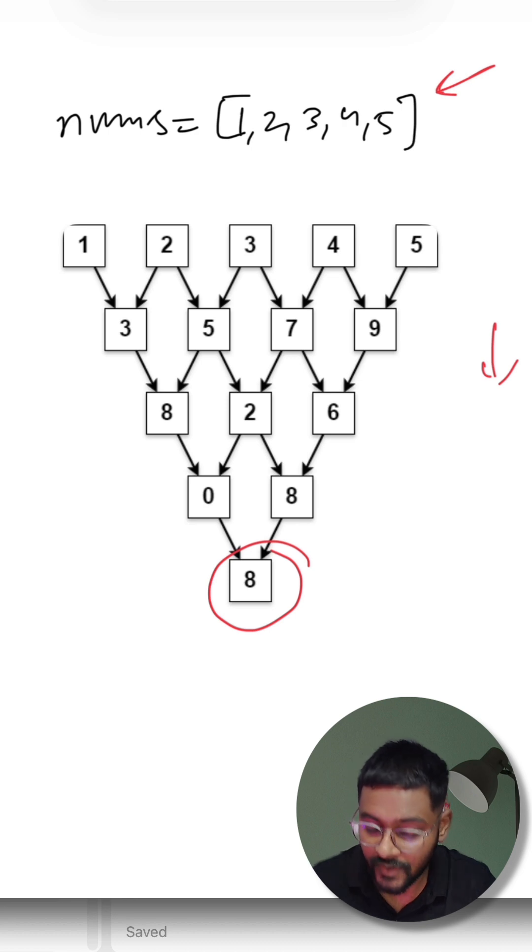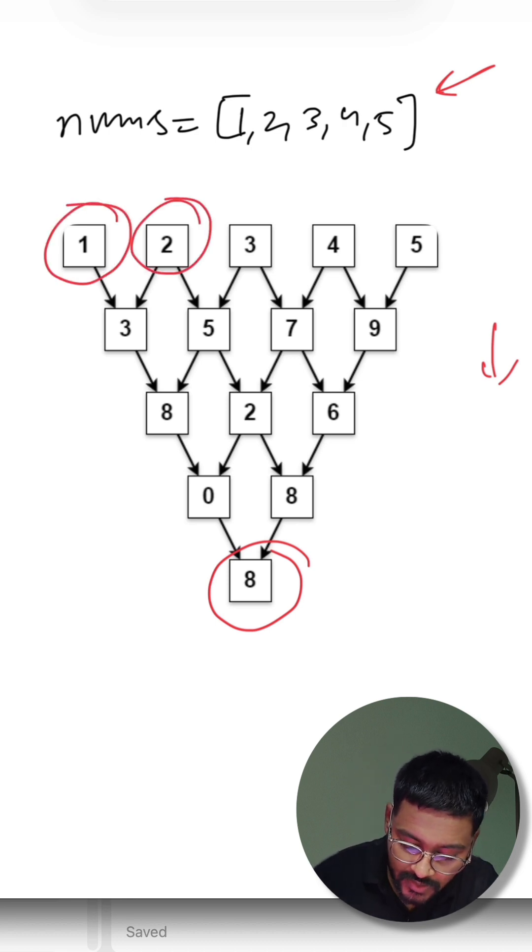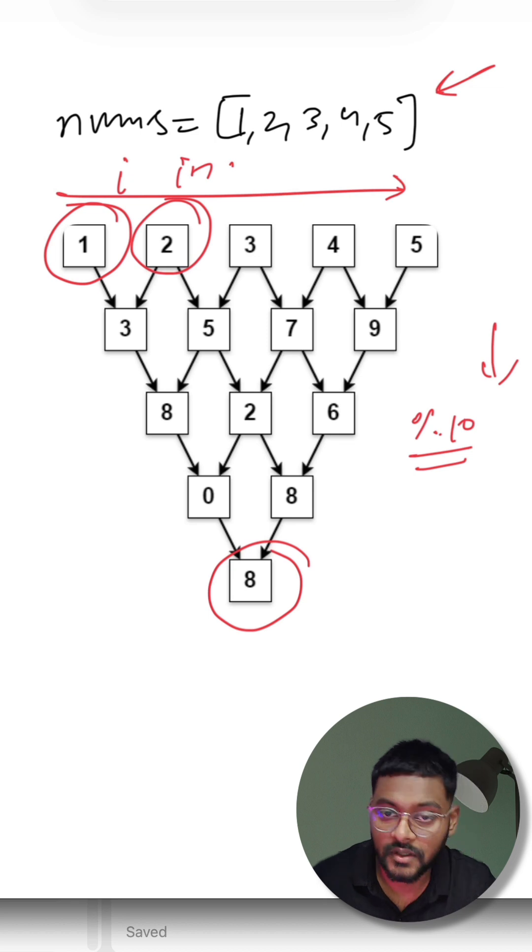What we have to do is take the ith element and i+1 element, sum them, and take modulus with 10. Initially this is the array. If I perform this step one time, i and i+1 are combined together and we take modulus with 10, then i+1 and i+2, and so on.